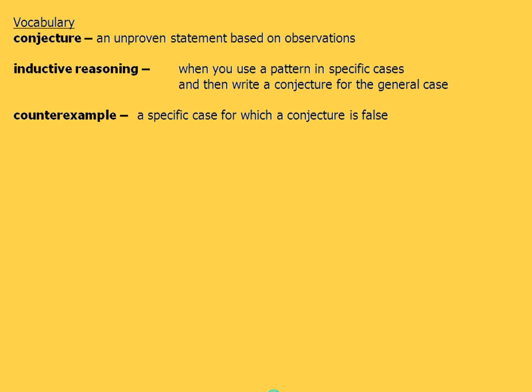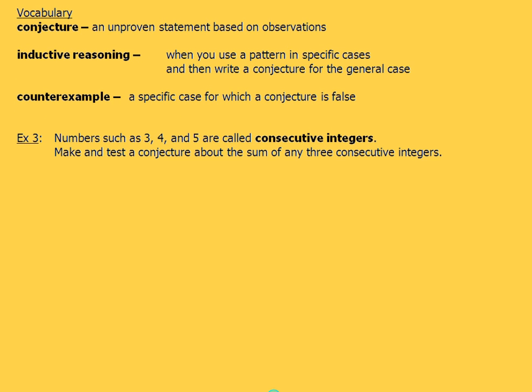Now, let's go ahead and get right into some of these. We're going to take a look at numbers 3, 4, and 5. These are consecutive integers. We've got to make and test a conjecture about the sum of any three consecutive integers. So I just need three numbers in a row. And let's kind of see what happens when we do that. So if I take 3 plus 4 plus 5, if I add those up, 3 and 4 is 7 plus 5, I end up with 12.